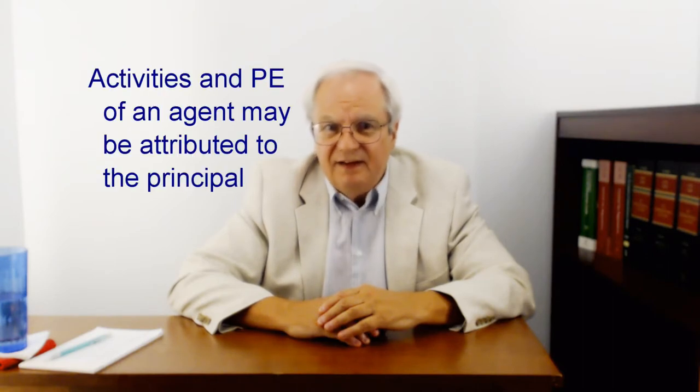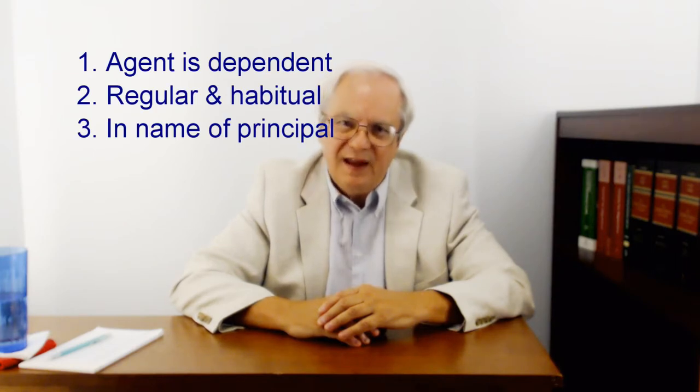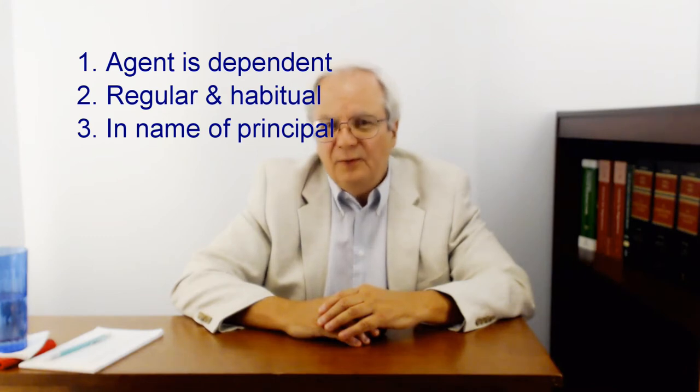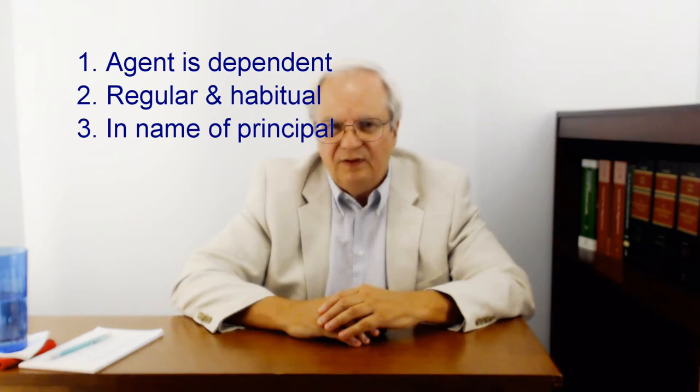It's a long-standing principle of common law, and thus U.S. law, that the activities of an agent are attributed to the principal. Treaties have the same sort of rule, but with some significant limitations. They treat activities of an agent as attributable to the principal only if three conditions are met. First, the agent must be a dependent agent. Second, the activities must be regularly and habitually exercised by the agent. And third, the activity must be in the name of and for the account of the principal. All three conditions must exist or the agent's activities are not attributed — at least under most treaties. Read the treaty.